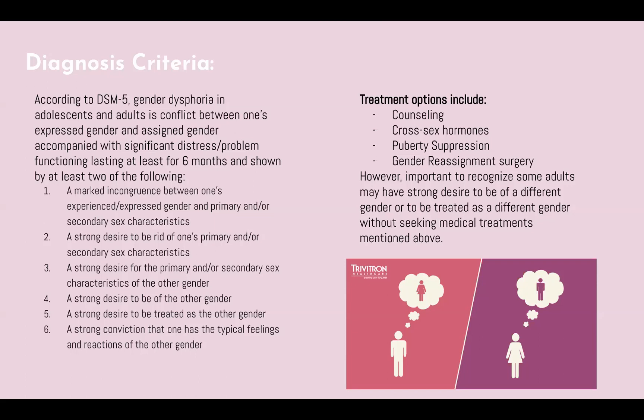Treatment options include counseling, cross-sex hormones, puberty suppression, and gender reassignment surgery. However, it's very important to recognize that not all adults who identify as transgender or who are diagnosed with gender dysphoria want to undergo these treatment options, and they do not have to undergo treatment to be diagnosed with gender dysphoria.